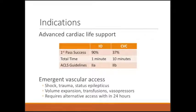The most common scenario for IO catheter placement is in the code setting. One institution compared IO catheters and central lines in code situations — IO catheter placement was significantly more successful, and when a central line was eventually placed it took up to 10 minutes, compared to an IO catheter average time of just one minute. Because of this, ACLS guidelines now recommend that if your peripheral IV is inadequate during a code, you go straight to an IO catheter — it's faster and much more successful than a non-sterile central line placement, which is unsafe for the patient and for those around sharp objects.